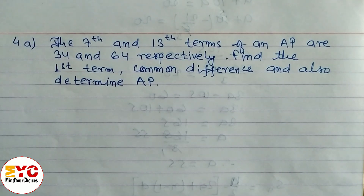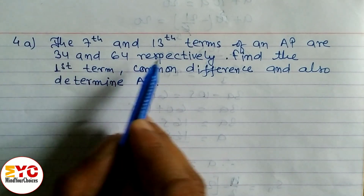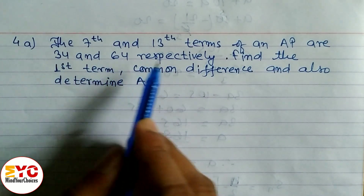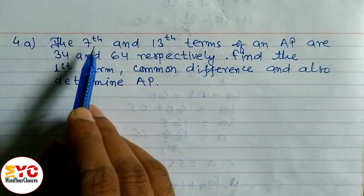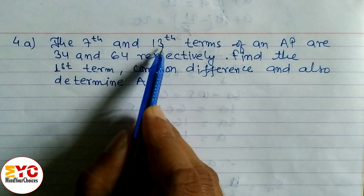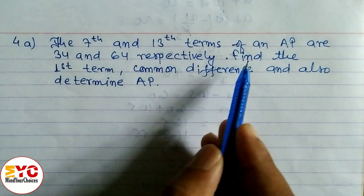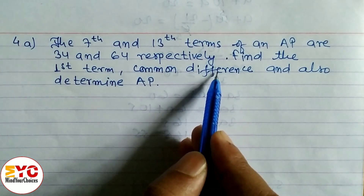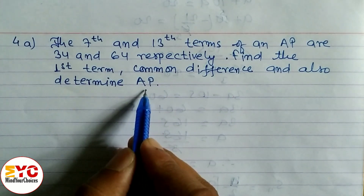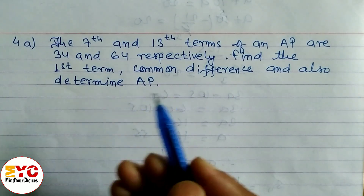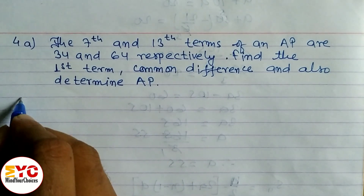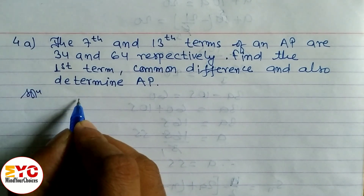Here we have question number 4 from arithmetic sequence. The seventh and the 13th term of an AP are 34 and 64 respectively. We have to find the first term, the common difference, and also determine the AP — meaning we need to find at least four to five terms.